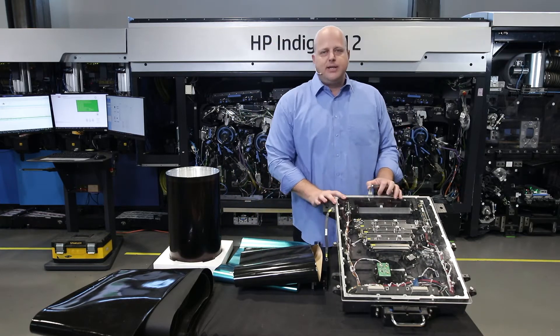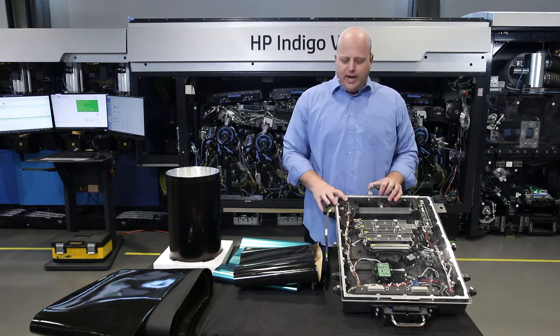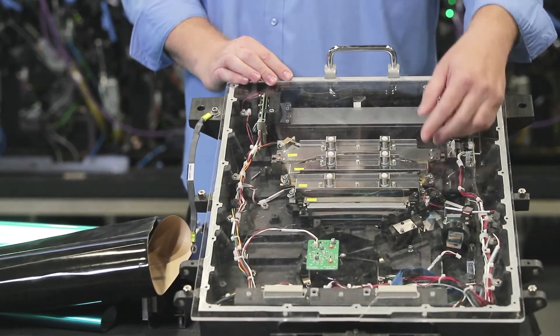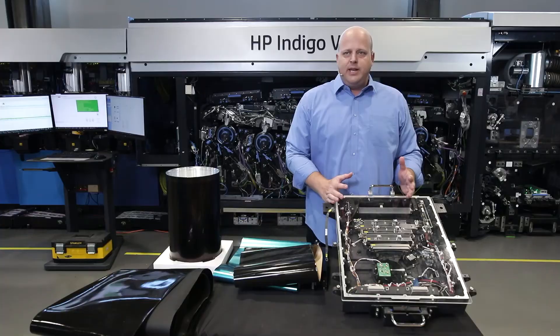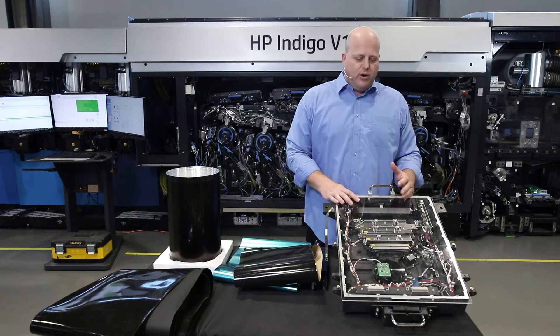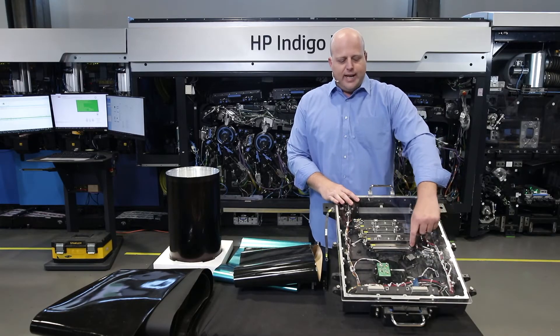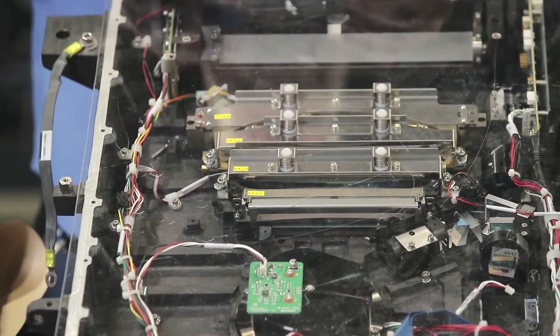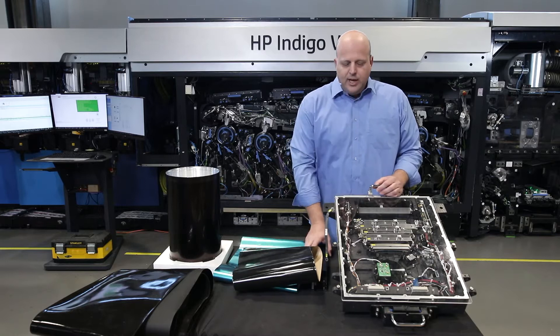The last major upgrade that we did for the V12 is the writing head. So I'm pointing here to the 6K writing head. It's an amazing piece of technology in the heart of the Indigo print quality. You have the laser light source pointing to our rotating mirrors and then a series of lenses all the way to deposit on the blanket.